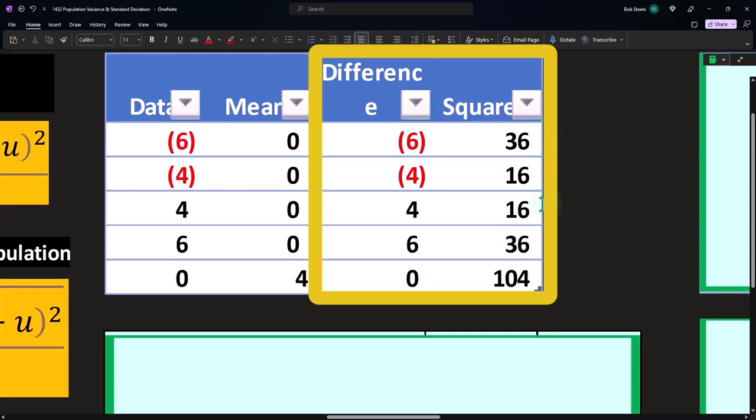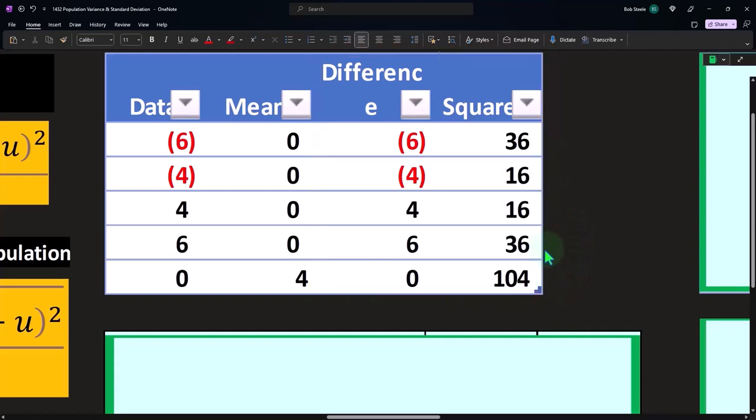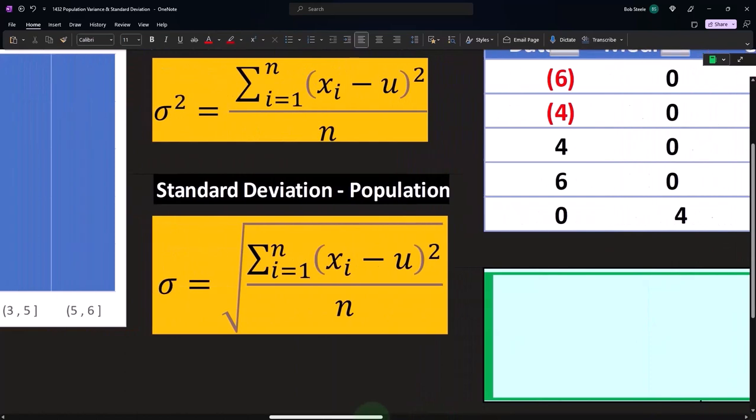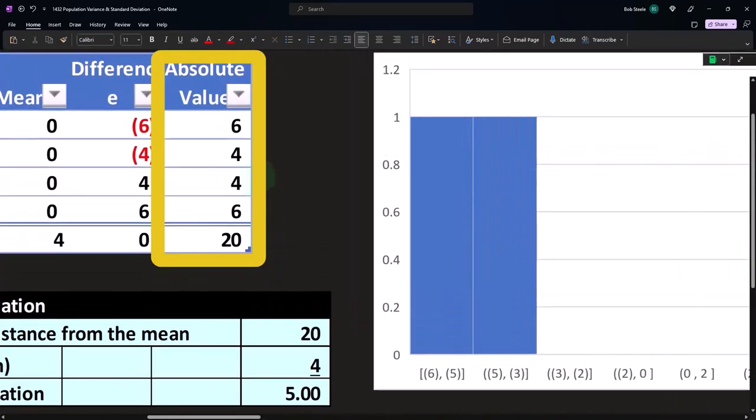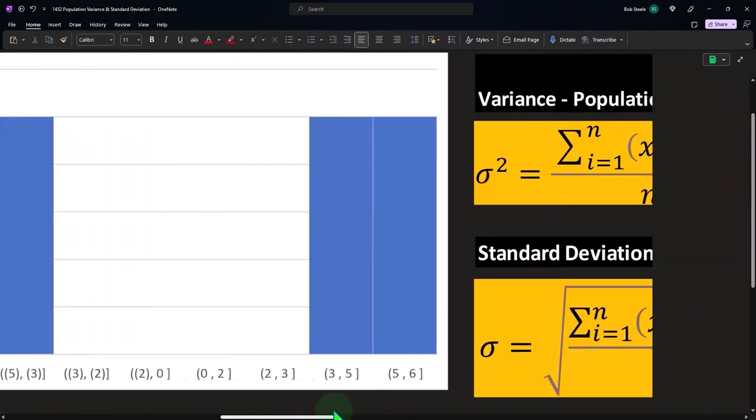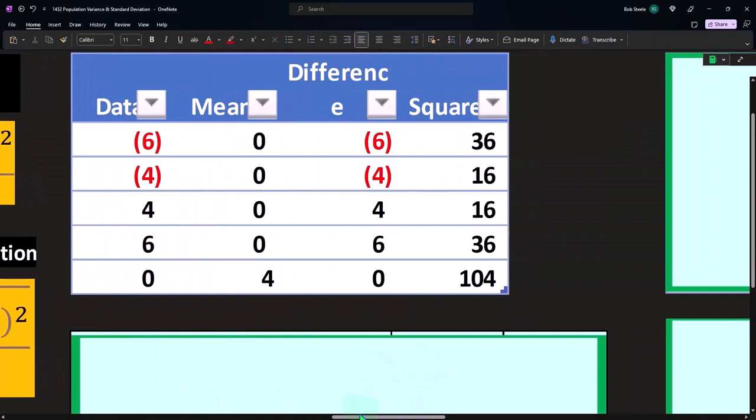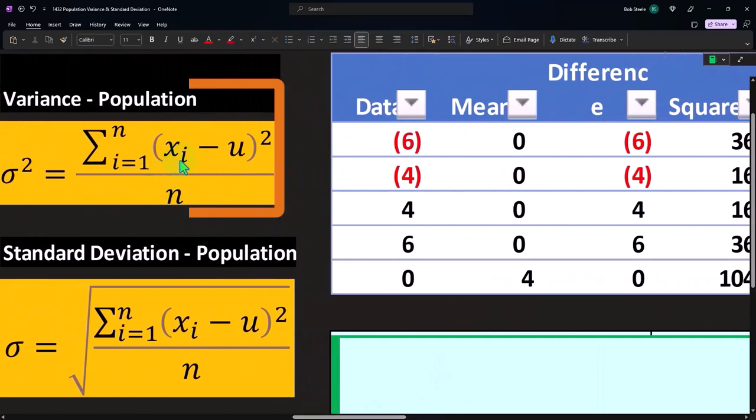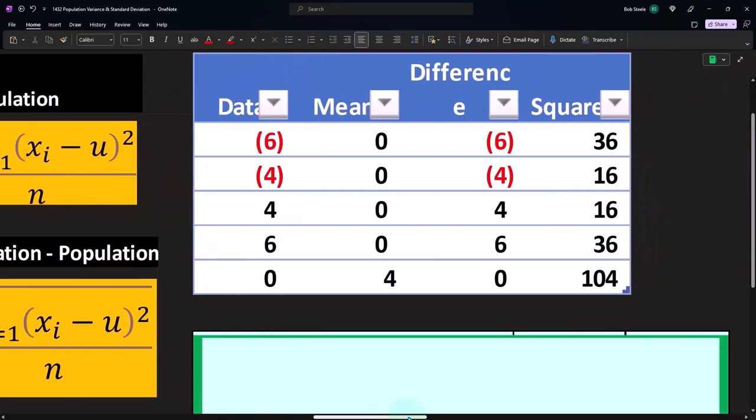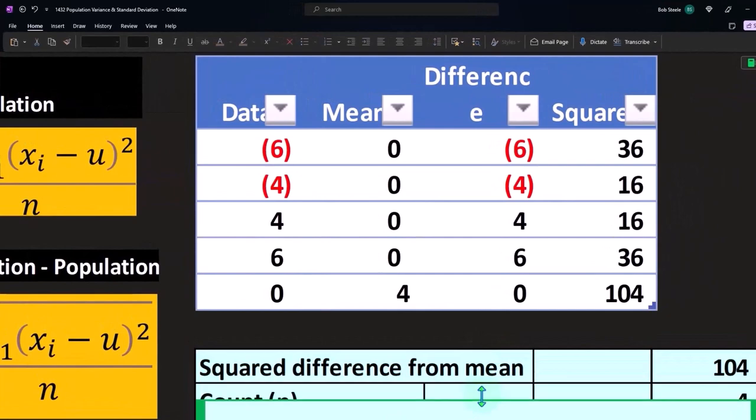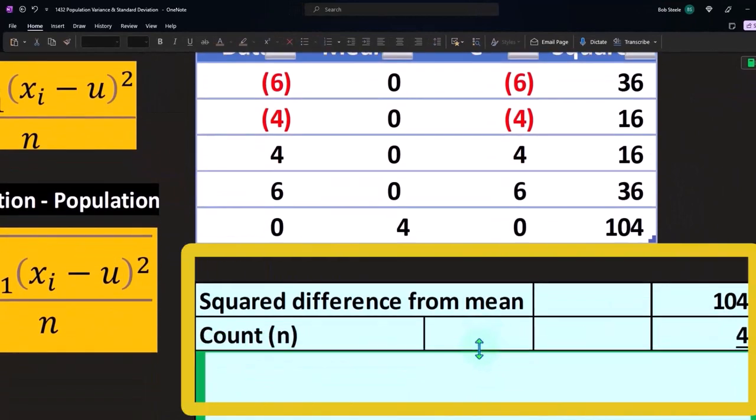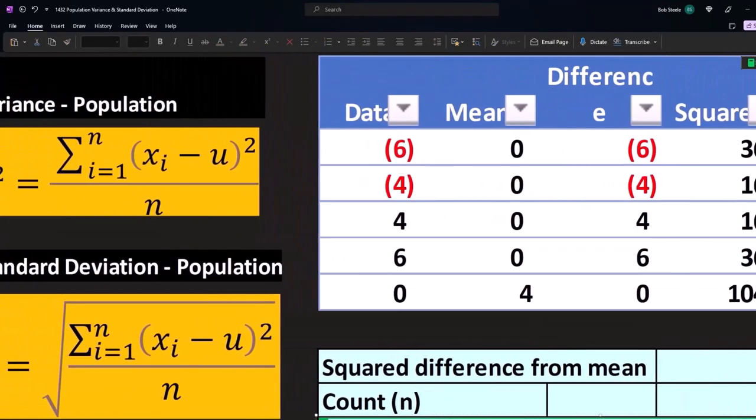When I sum these up, 36 plus 16 plus 16 plus 36, I come out to 104, versus over here which came up to simply 20. That's basically x sub i minus mu squared. I sum those up, and then I'm going to divide by the count or n.